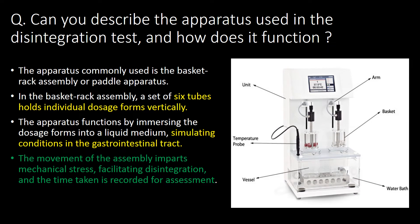Can you describe the apparatus used in the disintegration test and how it functions? The apparatus commonly used is the basket rack assembly or paddle apparatus. In the basket rack assembly, a set of six tubes hold individual dosage forms vertically. The apparatus functions by immersing the dosage form into a liquid medium simulating conditions in the gastrointestinal tract. The movement of the assembly imparts mechanical stress, facilitating disintegration, and the time taken is recorded for assessment.